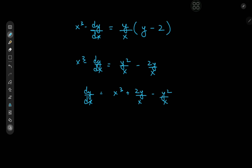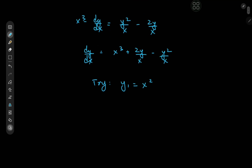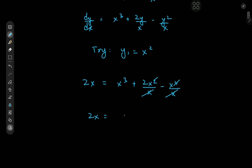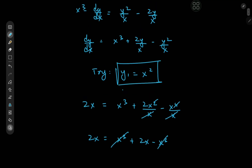Now the thing about a Riccati equation is that if you have a particular solution, you can solve for the general solution via a nice transformation. Before we get to that transformation, let's work out a particular solution. On the right-hand side we have x³ and a negative y²/x term, so it seems reasonable to try y₁ = x². That way the left-hand side gives 2x after differentiation, and the right-hand side gives x³ + 2x²/x − x⁴/x, which simplifies to x³ + 2x − x³ = 2x. This is true, confirming that y₁ = x² is indeed a particular solution.